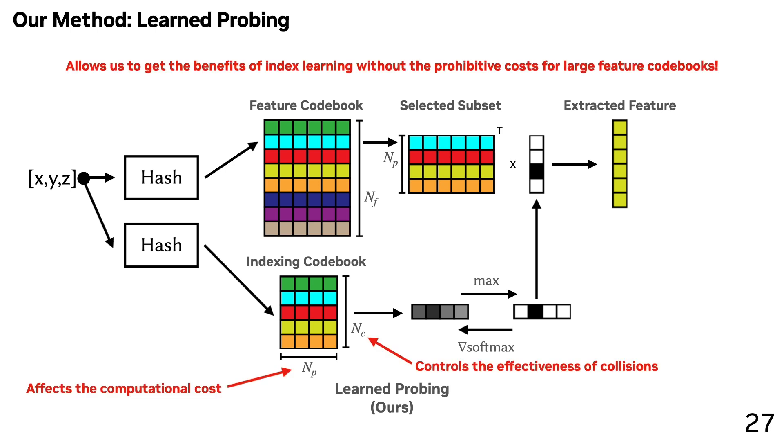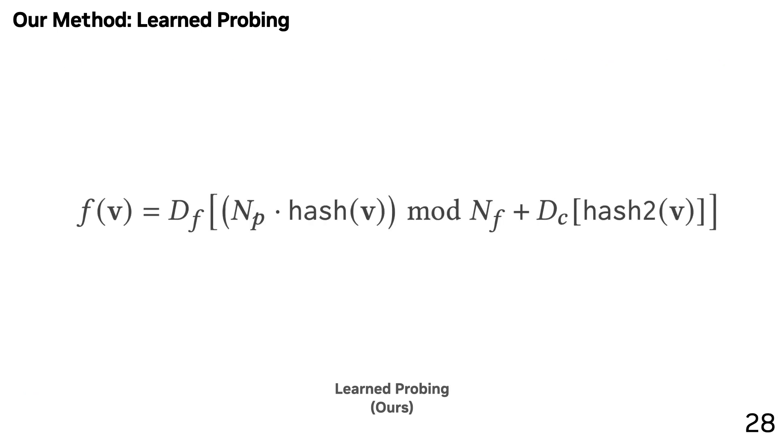This approach is cool because it lets us desegregate the probing range from the feature codebook size. Using a very similar technique known as index learning, we are able to do collision resolution for very large codebooks. That all seemed very complicated, but mathematically this ends up being a very simple arithmetic operation. We basically just take the same sort of hash mechanism but add an offset. This ends up being super fast when implemented correctly in CUDA.